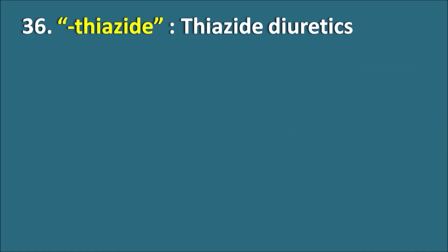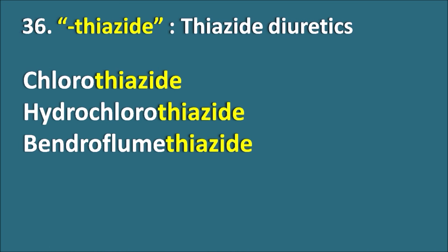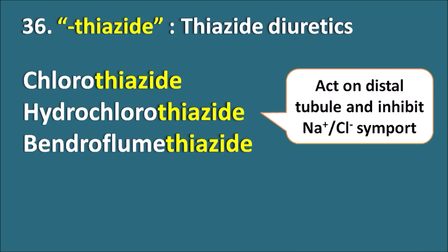Thirty-sixth, the suffix '-thiazide' indicates they are thiazide diuretics. Drugs like Chlorothiazide, Hydrochlorothiazide, and Bendroflumethiazide are all thiazide diuretics. These drugs act on the distal tubule and inhibit the sodium-chloride symport, thereby inhibiting the reabsorption of sodium and other cations.